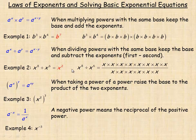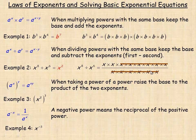To show why that's true: x to the eighth means eight x's multiplied, and we're dividing by x to the sixth, which is six x's multiplied. When dividing, pairs of x's cancel out — six x's on the bottom cancel with six x's on the top, leaving a one on top. What remains is x times x, which is x squared.